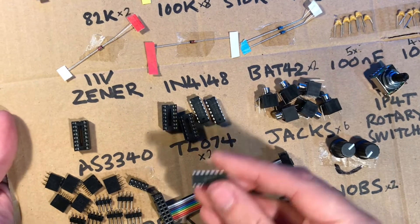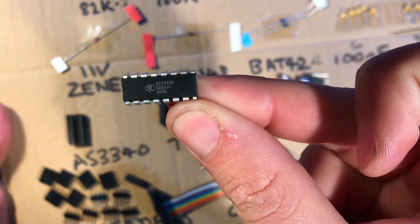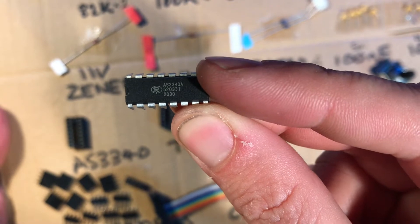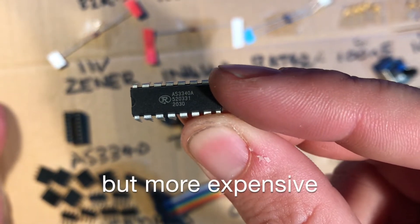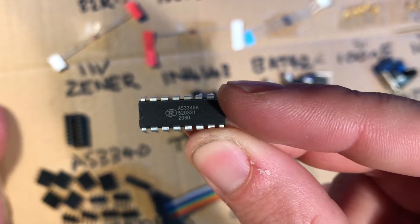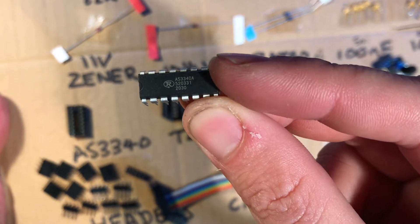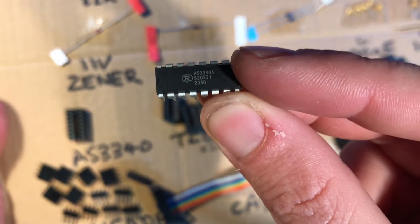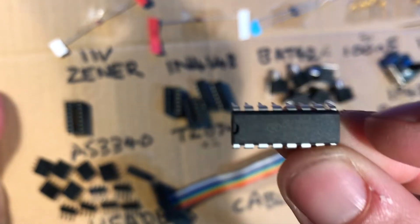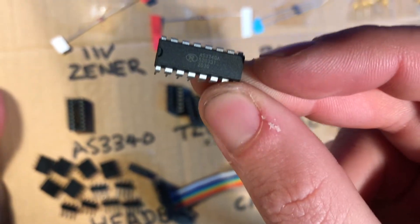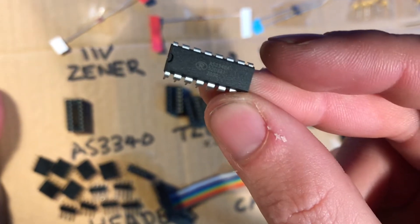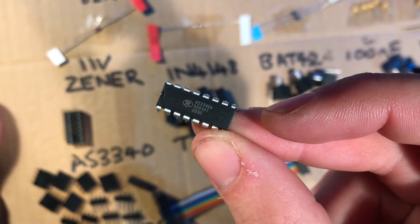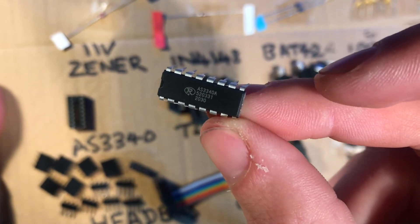Moving on to the ICs and the IC sockets. Of course the core of the module is the AS3340 chip here. I go for the AS3340A which is a slight improvement on the plain AS3340. Main advantage being that the pulse width modulation does not affect the tuning of the triangle and sawtooth waves, which is nice. But you know it's up to you if you just want to use a plain one, because why would you be using the pulse width modulation if you're listening to the sawtooth and triangle wave. It doesn't have an effect on them. So you know it's just me being a bit of a perfectionist.